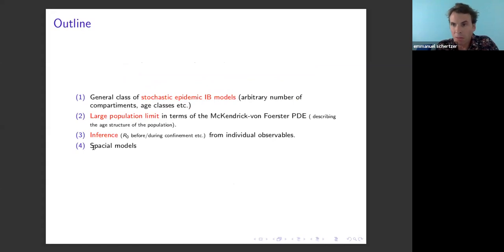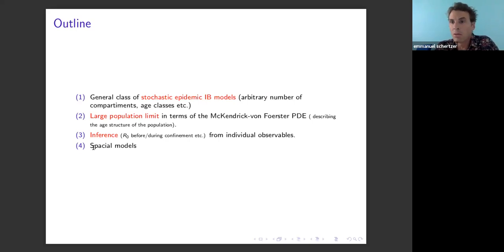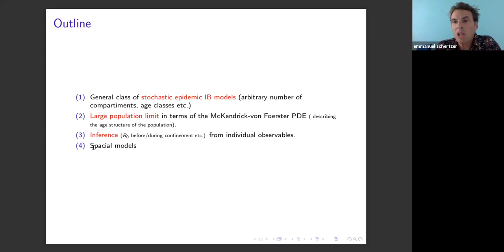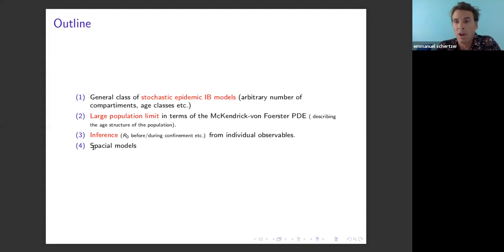The outline of Emmanuel's talk: first, a very general class of stochastic individual-based epidemic models with an arbitrary number of compartments — hospitalized, ICU, different age classes, any type of heterogeneity. At the microscopic level these models are difficult to handle, but in a large population limit everything boils down to a very simple PDE: the McKendrick-von Foerster PDE. This PDE describes the age structure of the population — the age of infection, meaning how many days you have been sick. Once you solve this PDE you can recover all observables.